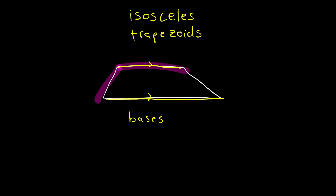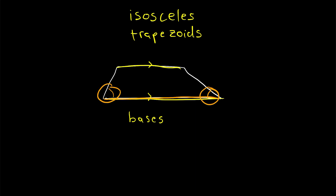In a trapezoid, none of the sides have to be equal and none of the angles have to be equal either. Two angles of a trapezoid that are adjacent to the same base are called base angles. So this is a pair of base angles of this trapezoid, and we also have another pair of base angles up here — they are angles adjacent to the same base of the trapezoid.